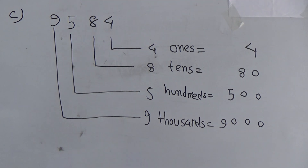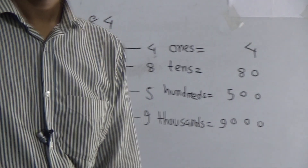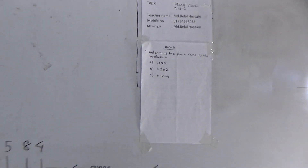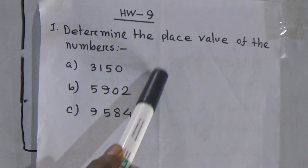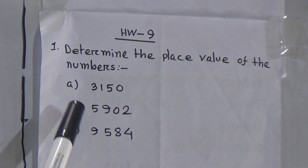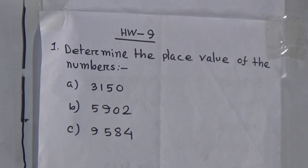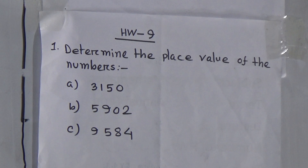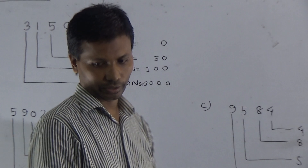Dear student, now I will talk about your homework. Today our HW number is 9. Question one: determine the place value of the numbers A, B, C. That means for each digit you determine the place value — same as our lecture today.